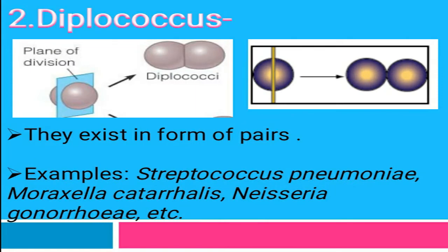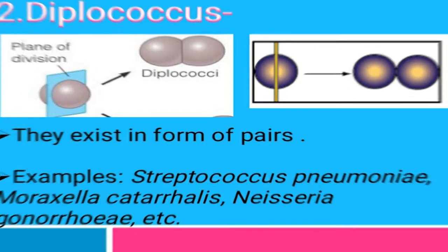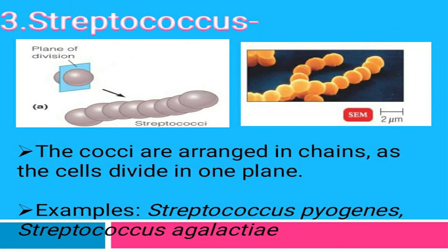The next arrangement is diplococcus. In diplococcus, the coccus cell divides in one plane — either X, Y, or Z plane — and produces two daughter cells that remain joined together in a chain-like form. This is called diplococcus. Examples include Streptococcus pneumoniae, Moraxella catarrhalis, and Neisseria gonorrhoeae.